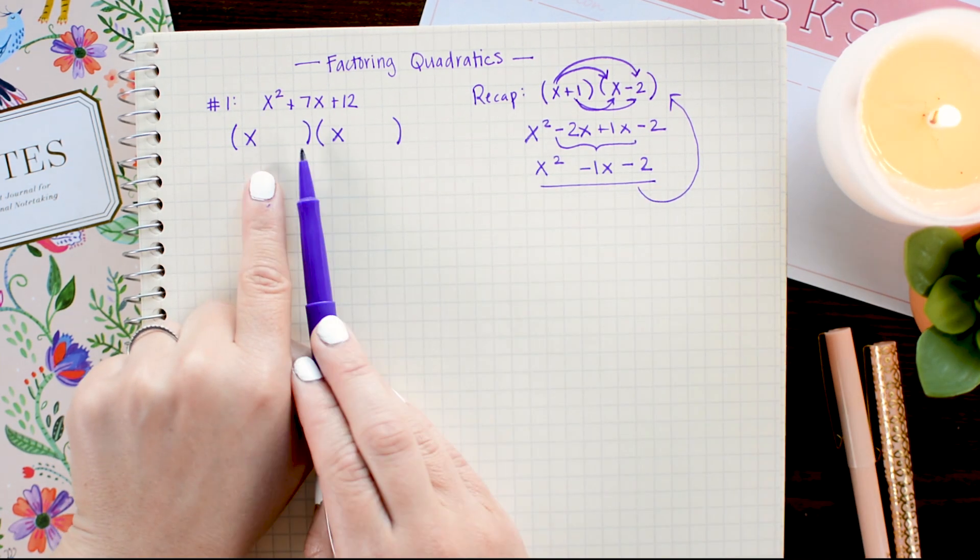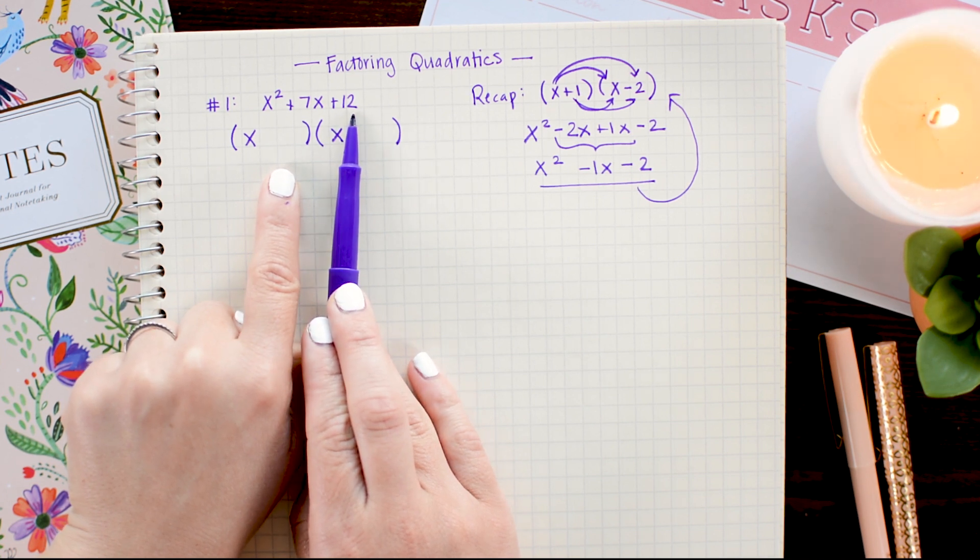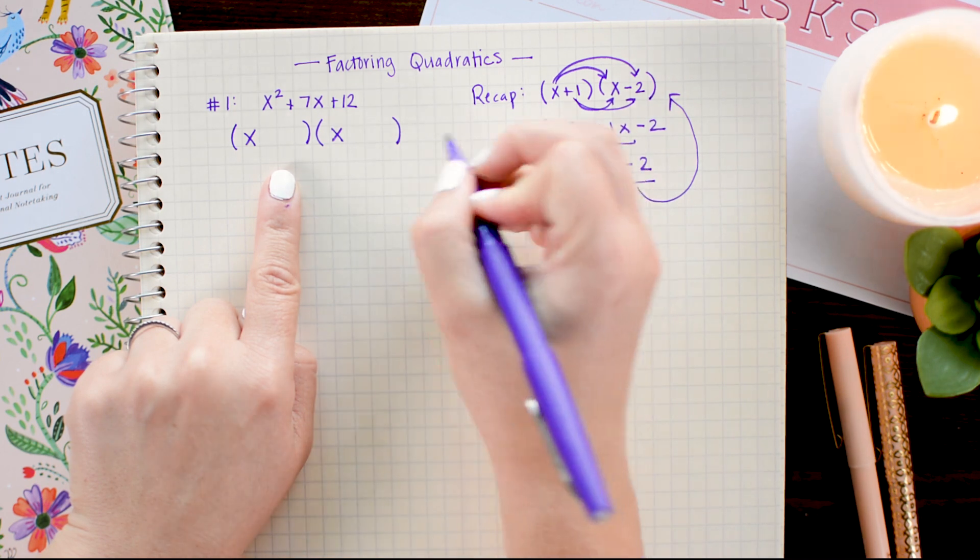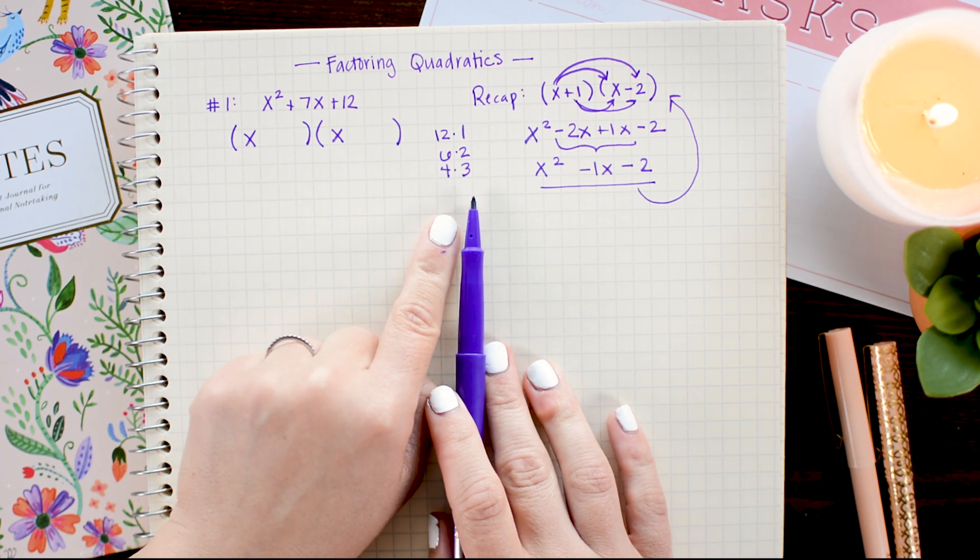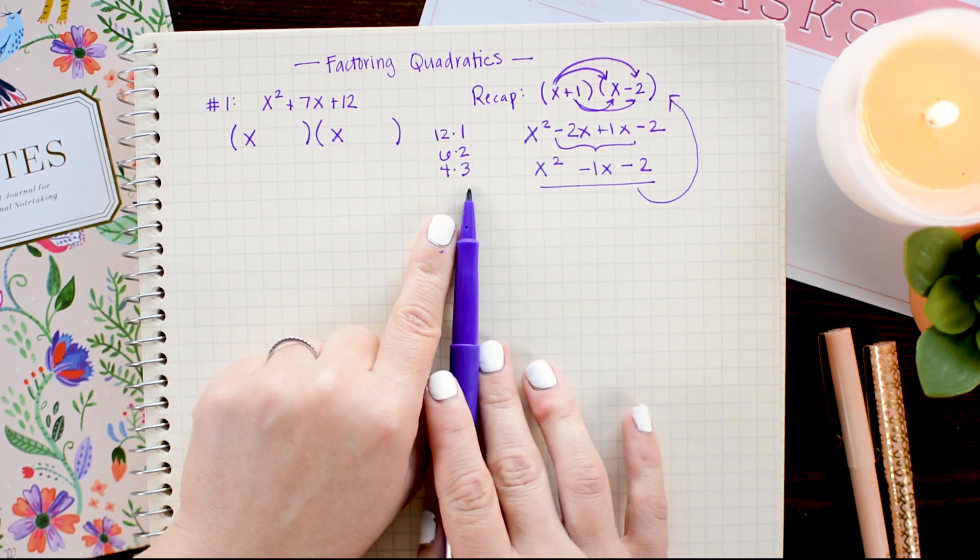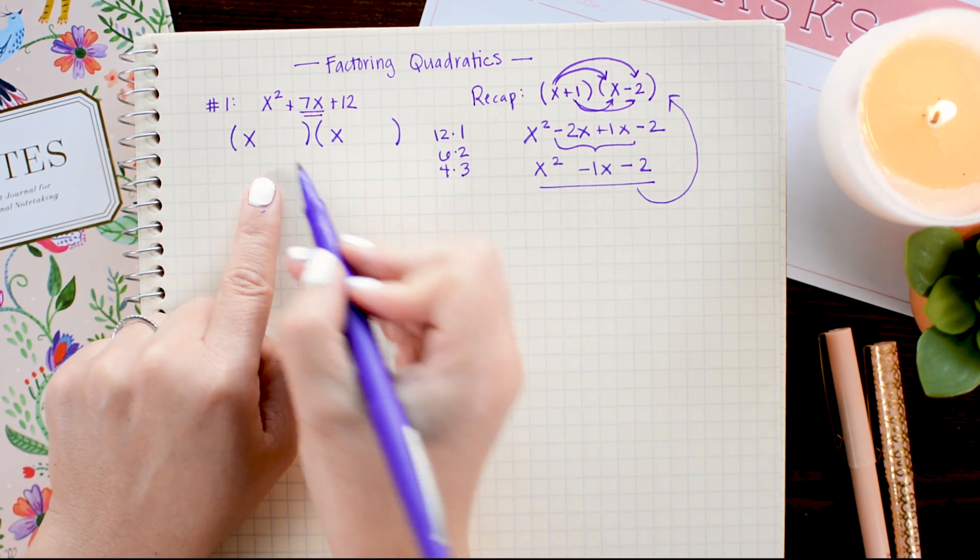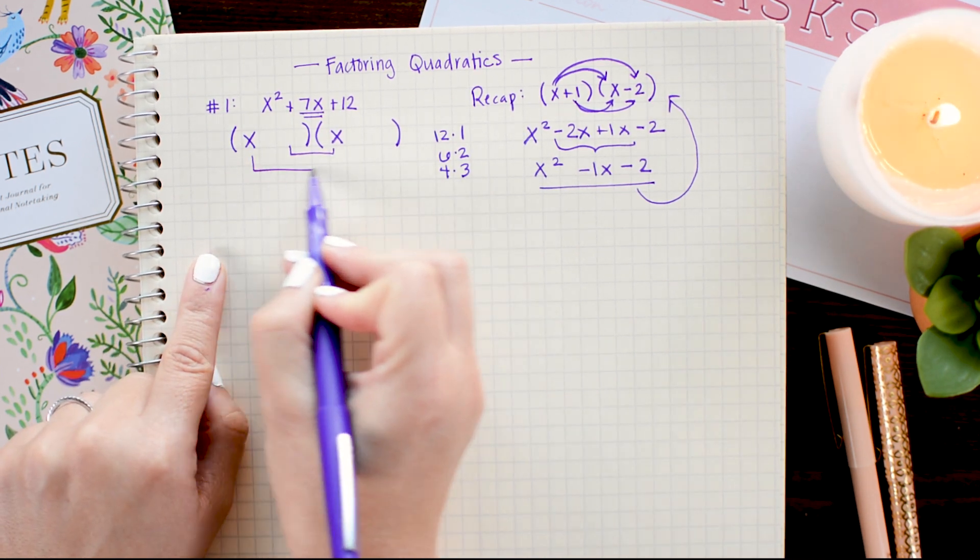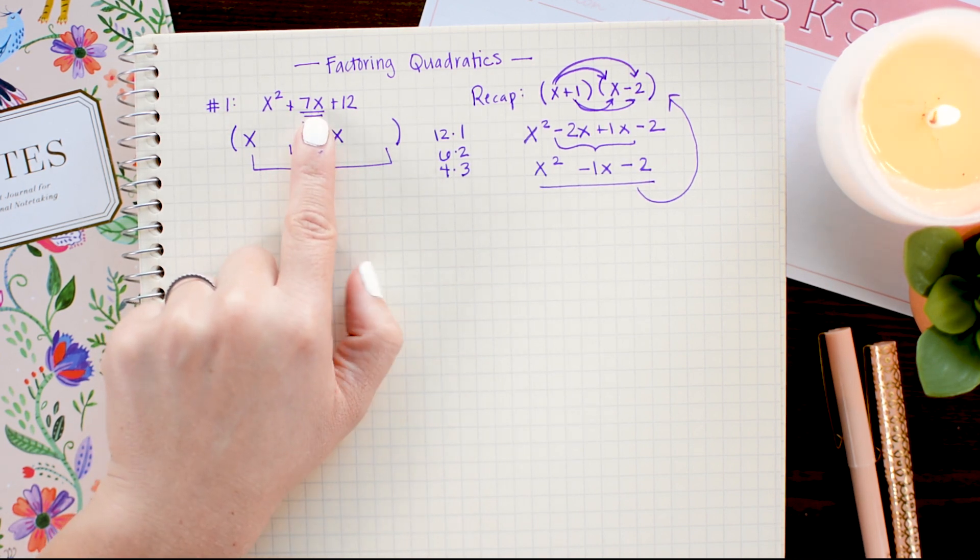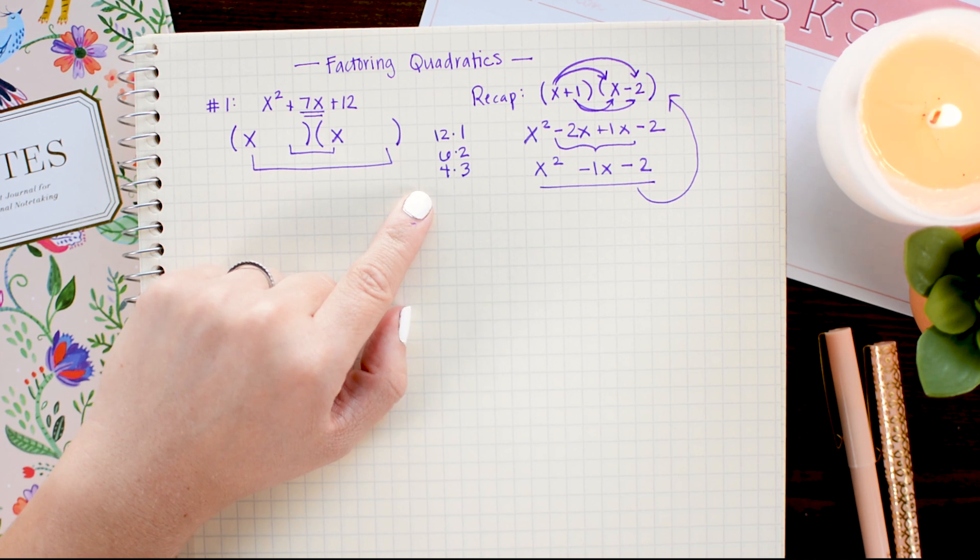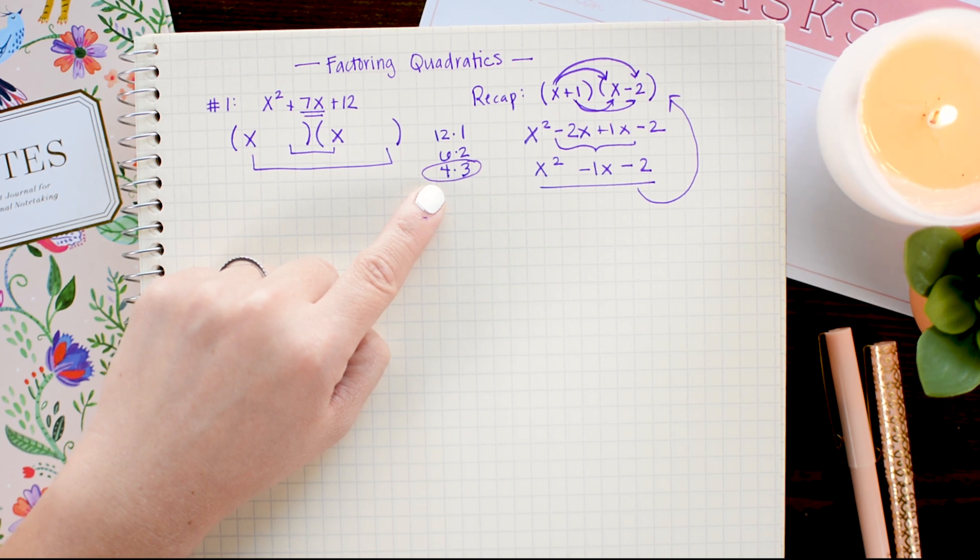So I have a few options for these positions. Factors of 12 include 12 times 1, 6 times 2, and 4 times 3. Just going to write those to the side. Now which of these I choose depends on what I'm trying to combine to make in the middle. So in this problem, I want a 7x in the middle. So I know that whatever is multiplied here and here needs to combine to a positive 7x. So I'm just going to look at my factors and see which of those add to 7. And here I see that 4 times 3 does. So those are the numbers I'm going to place.